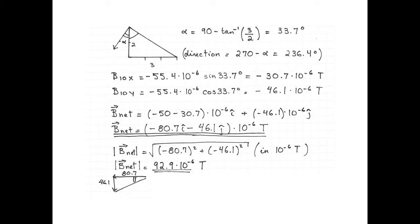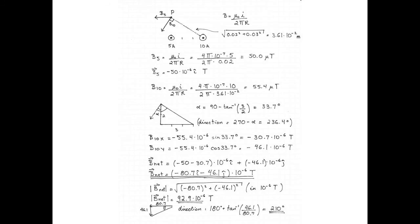Now to find the direction, I'm going to redraw my magnetic field vector, 80.7 microtesla to the left and 46.1 microtesla down. The direction of the net vector is 180 degrees plus the inverse tan of 46.1 over 80.7, which is 210 degrees.